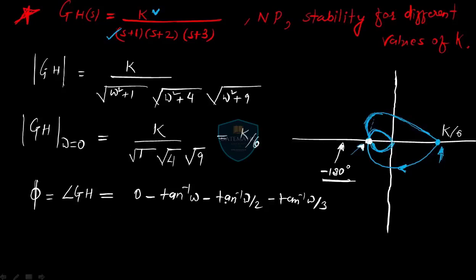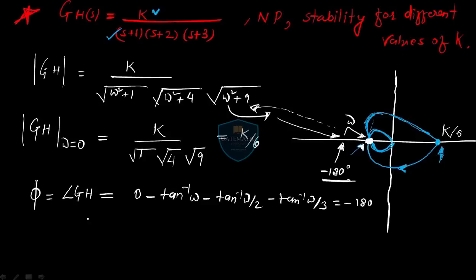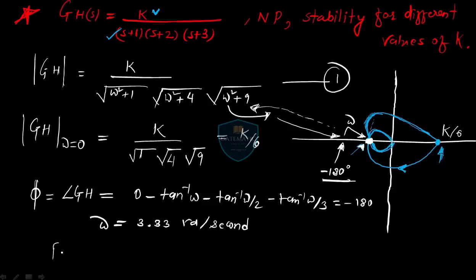We compare this phase equation with −180° because we need to calculate the crossing point. If we have the value of ω at this point, we substitute it into the magnitude equation to get the magnitude. Solving this equation with one unknown, the ω we get is 3.33 radians per second.